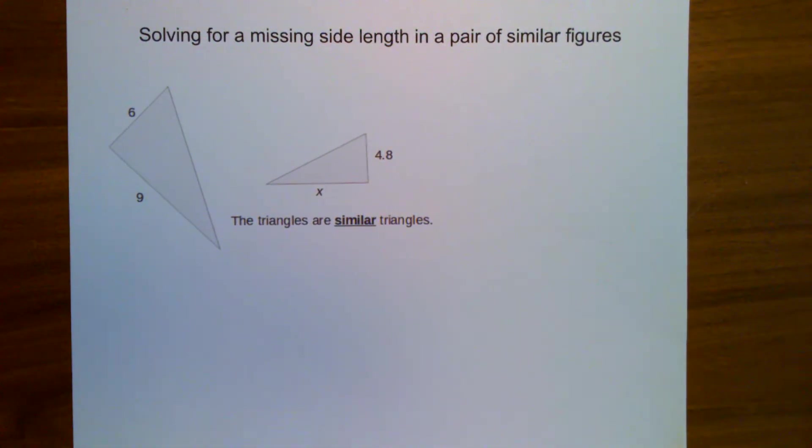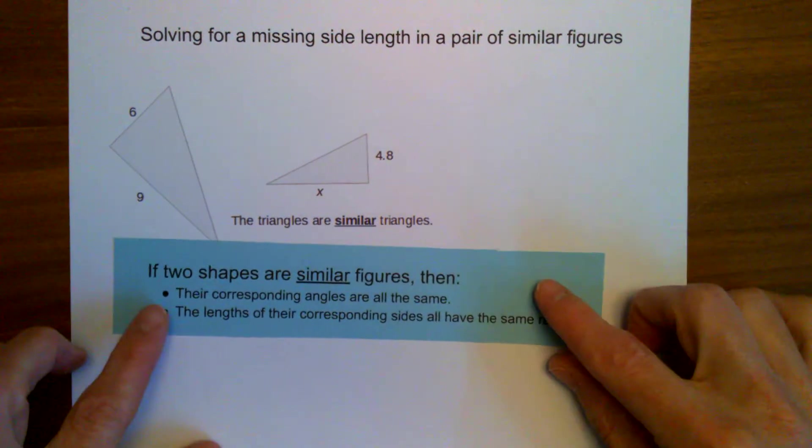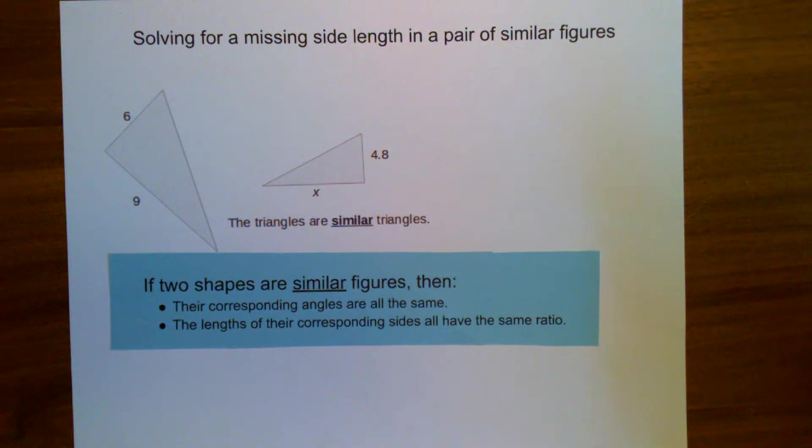First, we need to establish what it means for these two triangles to be similar figures. If two triangles are similar, or two shapes are similar, that means their corresponding angles are all the same, like the measure. The number of degrees in each angle are the same.